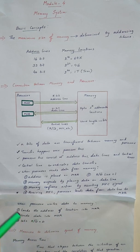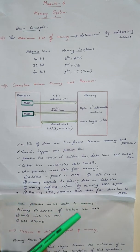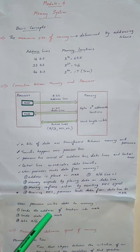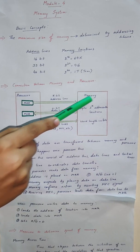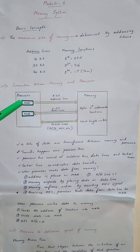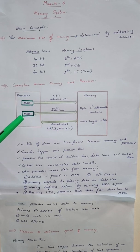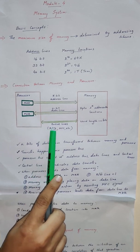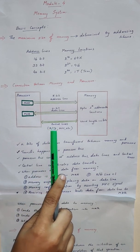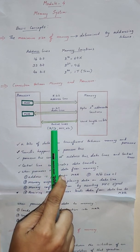Similarly, the write operation. When the processor writes data to the memory, first it loads the address of the location into the MAR register. The data to be written should be placed in the MDR register. Also, the control signal read or write should be set to 0, because 0 denotes a write operation.